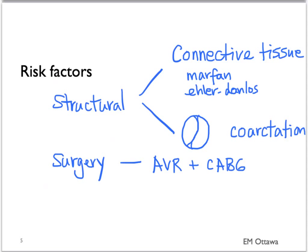The most important cause, however, is hypertension. This is the number one risk factor for aortic dissection.